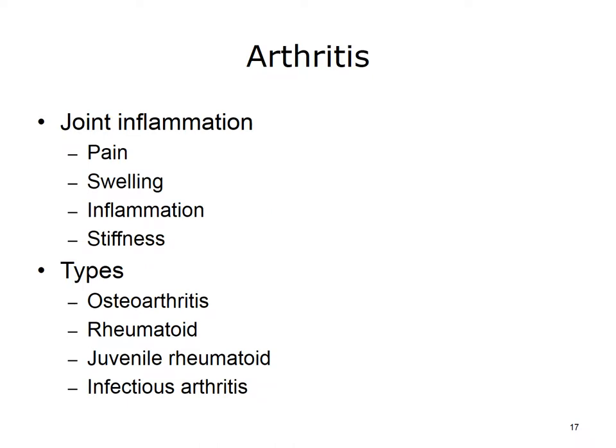Arthritis literally means joint inflammation. Although it describes a symptom or sign rather than a specific diagnosis, the word arthritis is often used to refer to any disorder that affects the joints. Arthritis is characterized by pain, swelling, inflammation, and stiffness. One type, osteoarthritis, is often related to aging or to an injury. Other types occur when your immune system attacks your body's own tissues — rheumatoid arthritis is the most common form of this kind. Juvenile rheumatoid arthritis is a form of the disease that happens in children. Infectious arthritis is an infection that has spread from another part of the body to the joint.